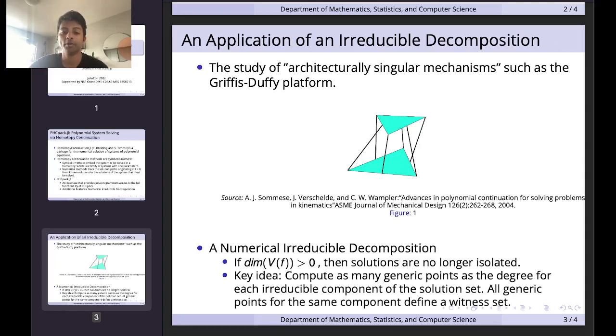We want to compute as many generic points as the degree of each irreducible component of our solution set. These generic points for a given component define our witness set. We can think of factoring a polynomial over the real numbers or over the integers as reducing a polynomial to its irreducible components. Extending that idea, we compute the intersection of each of our irreducible components with a random affine subspace of degree less than that. These intersections will happen at d different points where d is the degree of each of our irreducible components.